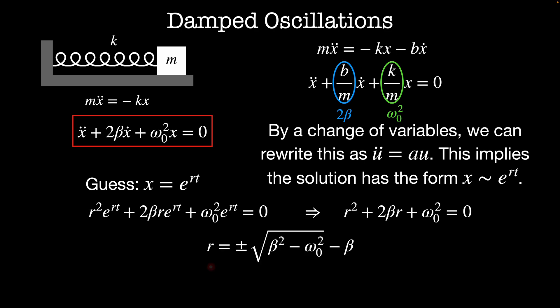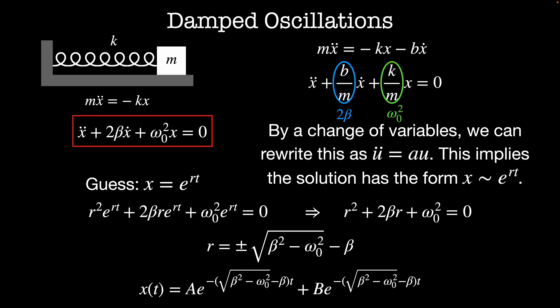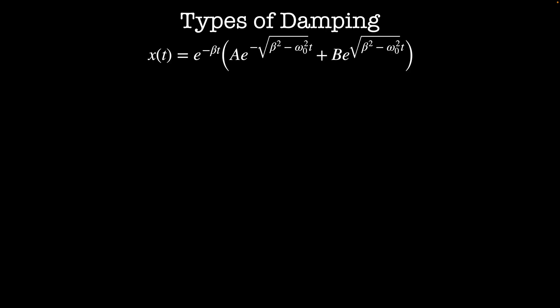This has solutions r = -β ± √(β² - ω₀²). Thus our full trajectory is x(t) = a·e^((√(β²-ω₀²) - β)t) + b·e^((-√(β²-ω₀²) - β)t). We get different types of damping behavior depending on whether β is bigger or smaller than ω₀.